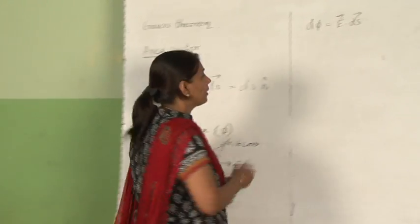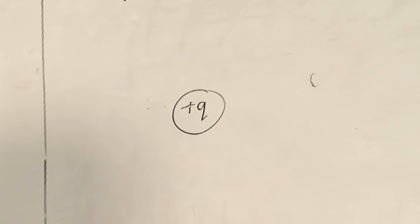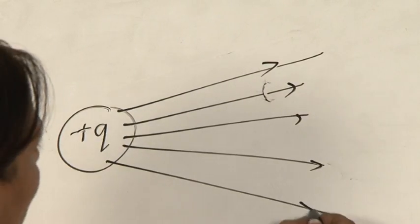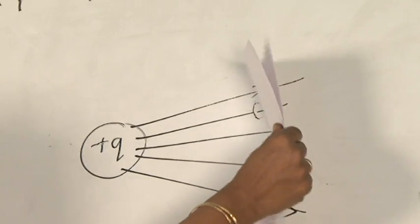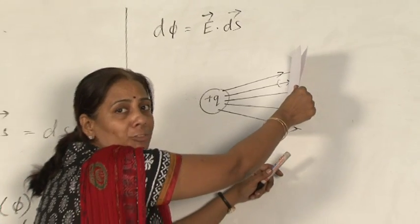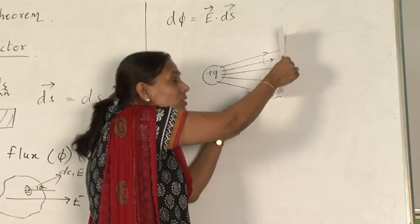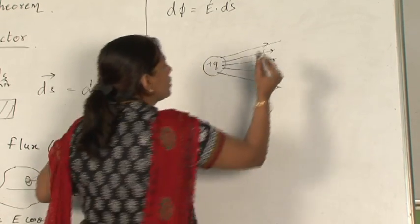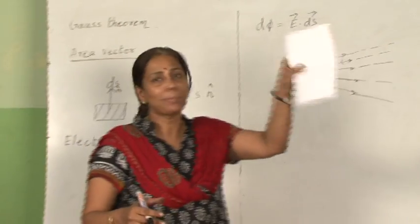Let us understand this in a different way. Suppose I have a charge plus q; the electric lines of force will be radially outward in all directions. Now, let us take some surface — just keeping the surface like this. What is happening to the electric lines of force? They are just crossing this surface. So electric flux is the number of lines of force which are crossing, or linked with, this surface. Now, if I just extend this, it means that it depends upon the area of the surface which I am considering.